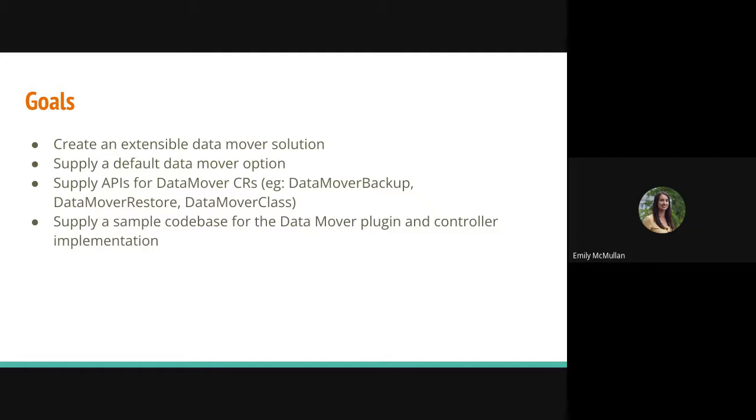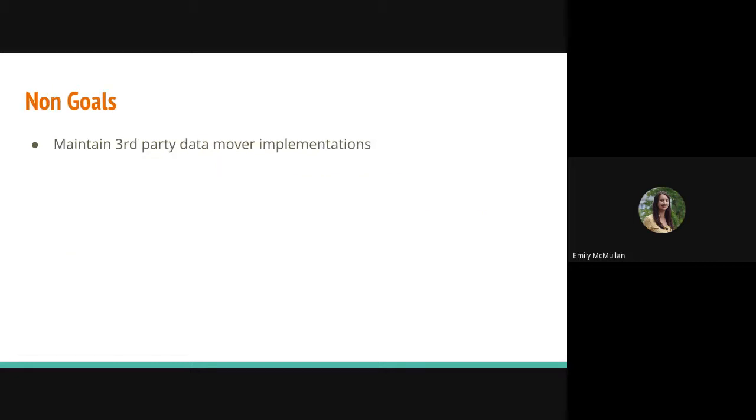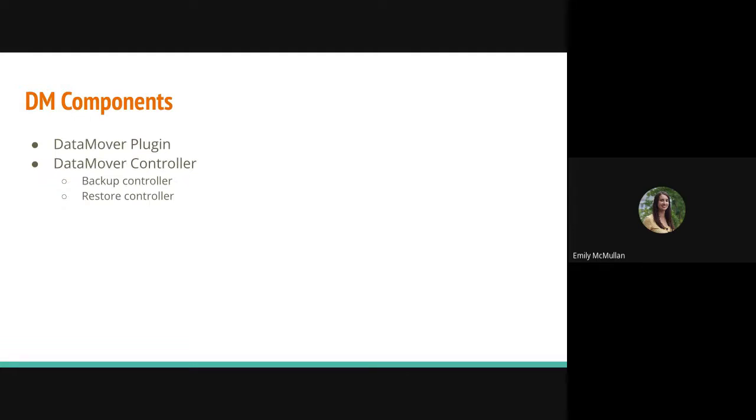So we have come up with a data mover design, and this is going to help overcome that challenge in that we will use it to back up and restore these snapshots from a remote location, such as an S3 bucket. And we just wanted to point out that the scope of this design is limited to CSI volumes. So our main goals for this data mover is to, one, create a data mover solution. We want to supply a default data mover option, which will be using VolSync, more specifically the rustic data mover that VolSync has. We want to supply APIs for data mover CRs. These will be data mover backup, data mover restore, and data mover class. And Savita will go more into depth on these CRs in a couple minutes. And we also want to supply a sample code base for a data mover plugin and controller for third-party implementation. So I guess third parties can come in and use these code bases to kind of create their own data movers. And then our non-goal will be to maintain these third-party implementations.